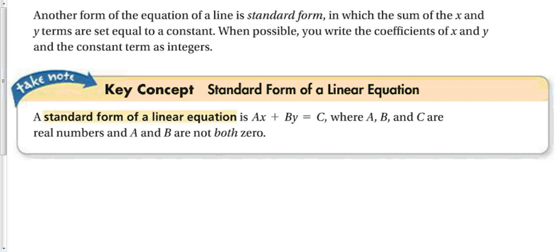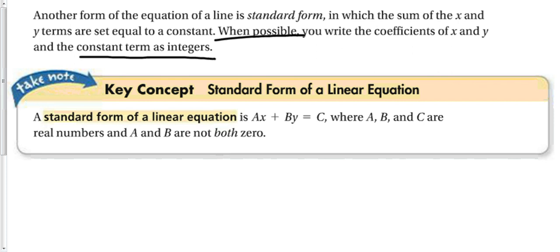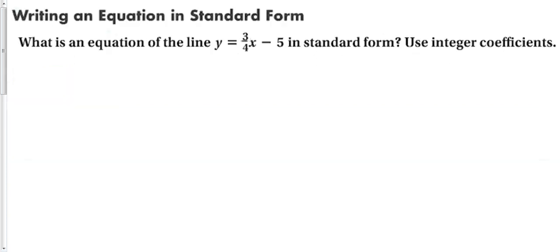Standard form of a linear equation has x and y terms on the same side set equal to a constant: Ax + By = C. When possible, the coefficients A and B and the constant C should all be integers — so if there are fractions, clear them. A and B cannot both be zero: if A = 0 we have a horizontal line; if B = 0 we have a vertical line.